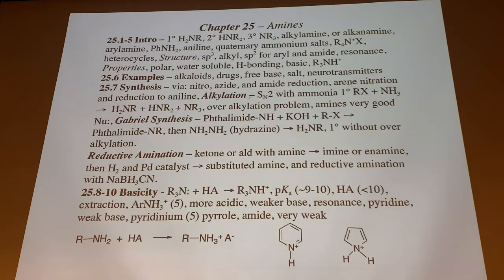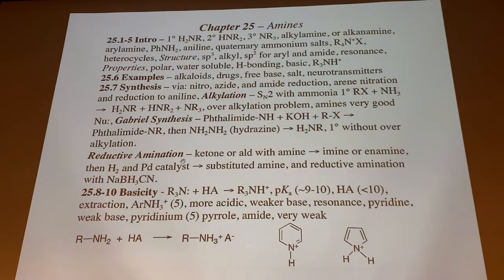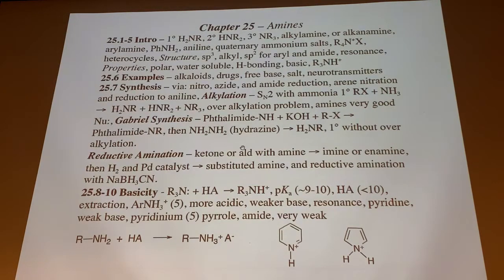For amine synthesis, we'll cover alkylation (back to SN2 chemistry from 351), the Gabriel synthesis using phthalimide for clean primary amine production, and reductive amination using sodium cyanoborohydride with an iminium ion formed from an amine and an aldehyde or ketone. This is analogous to hydrogenation with palladium and hydrogen but simpler — sodium cyanoborohydride with the amine and aldehyde goes directly to the amine product.